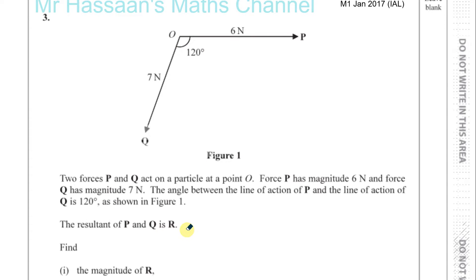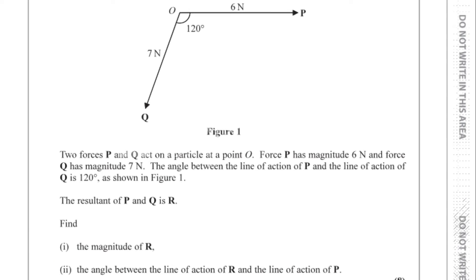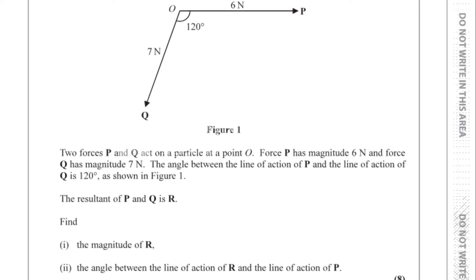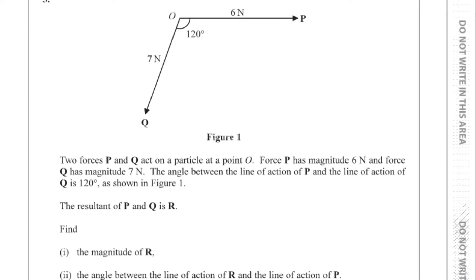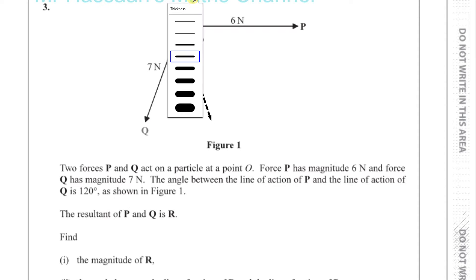The resultant of P and Q is R. We need to find first the magnitude of R, and secondly the angle between the line of action of R and the line of action of P. The resultant force is obviously going to be somewhere between these two forces — so R is going to be somewhere like this.